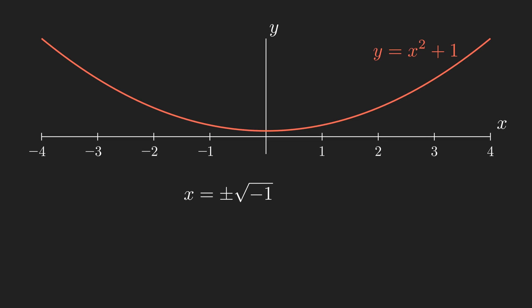Your intuition then is probably to give up here and assume that this equation is simply unsolvable. Perhaps instead, you try something different. You imagine some number, i, such that i squared equals negative 1, or i equals the square root of negative 1. This allows us to solve our equation as x equals plus or minus i.